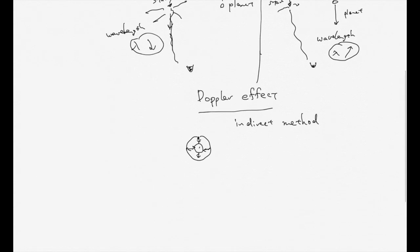Then people tried to find another indirect method to apply to discover the extrasolar planet. So this is what we are going to study: another method — the transit method.